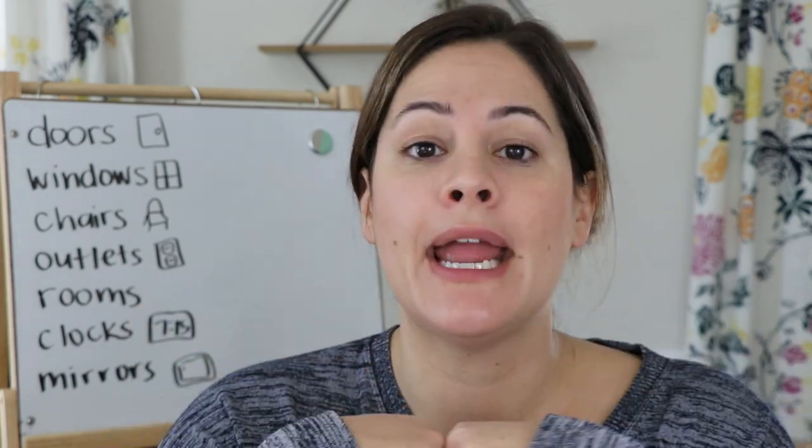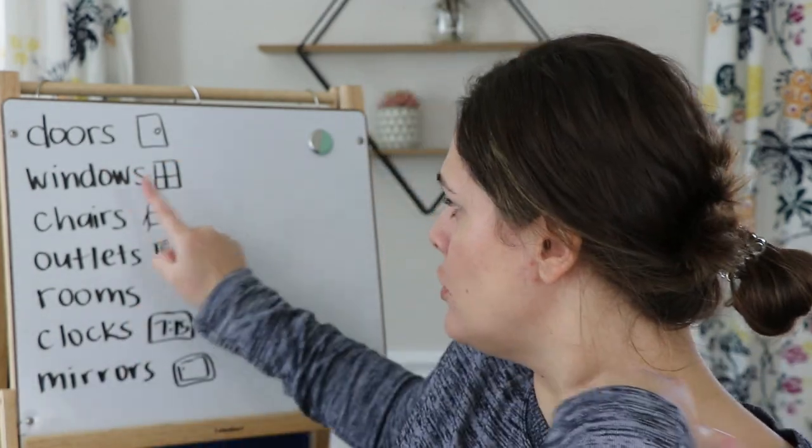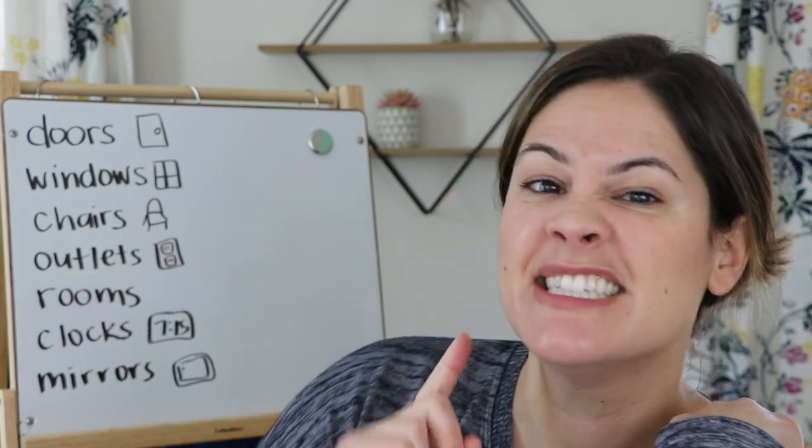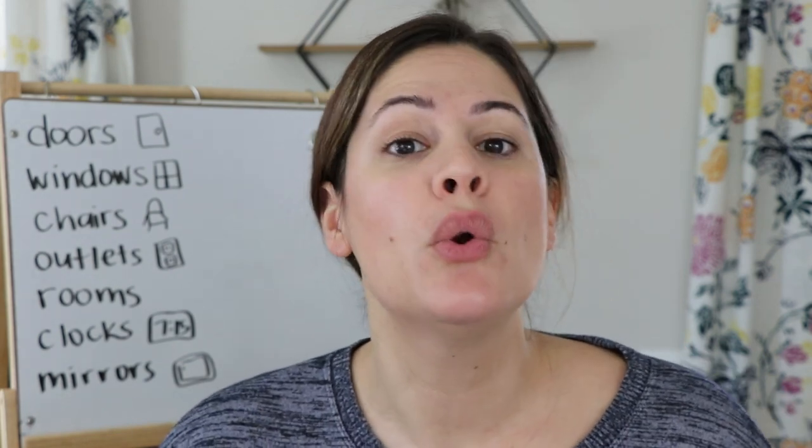I actually have a sheet for you if your parents want to print it out — it is in the description below. We have seven different things that you are going to have to go around your house and find out how many there are of each one. If you don't have access to a printer, that is a-okay. I am about to tell you what the seven things are right now that you have to go around and find in your house.